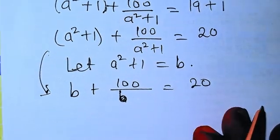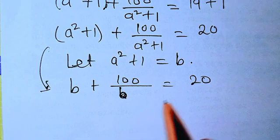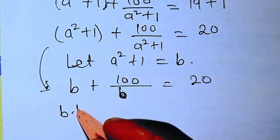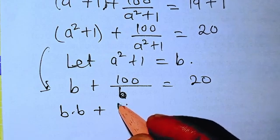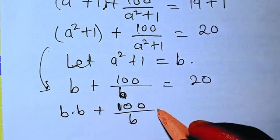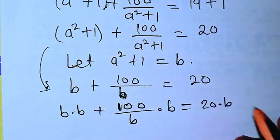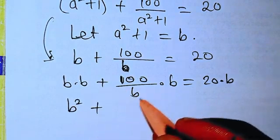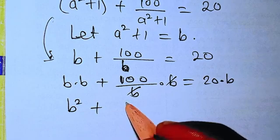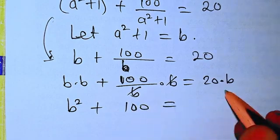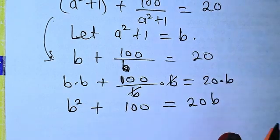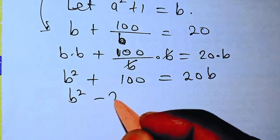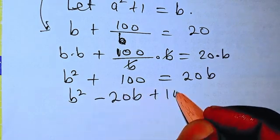So now from there we're going to have B plus 100 over B. So now from there we cancel this, we have 100, then equals 20B. So now from there we're going to have B squared, 20B will come inside. We're going to have minus 20B then plus 100 equals 0.